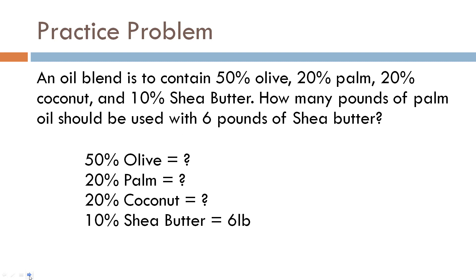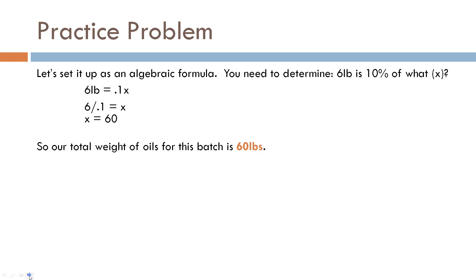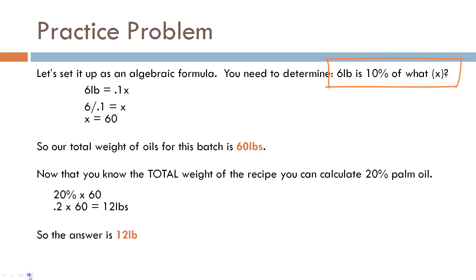Here's a practice problem. An oil blend is to contain 50% olive, 20% palm, 20% coconut, and 10% shea butter. How many pounds of palm oil should be used with 6 pounds of shea butter? Pause the video, do your math, and come back. The answer: set up the algebraic formula — 6 pounds is 10% of what? So 6 equals 0.1 times X. 6 divided by 0.1 equals 60 — the total weight of oils is 60 pounds. Now multiply by 20% for palm: 0.2 times 60 equals 12 pounds. The answer is 12 pounds.